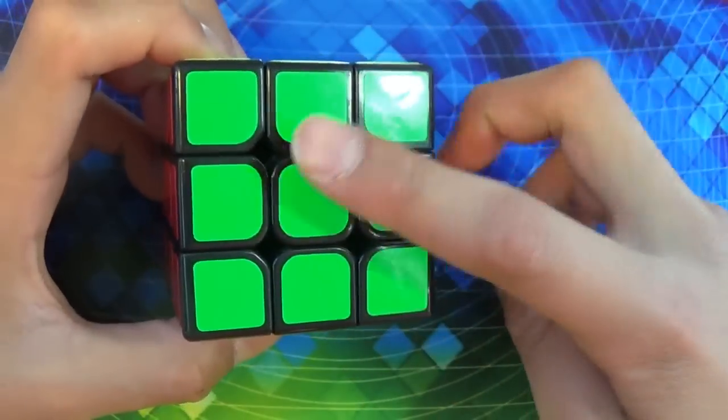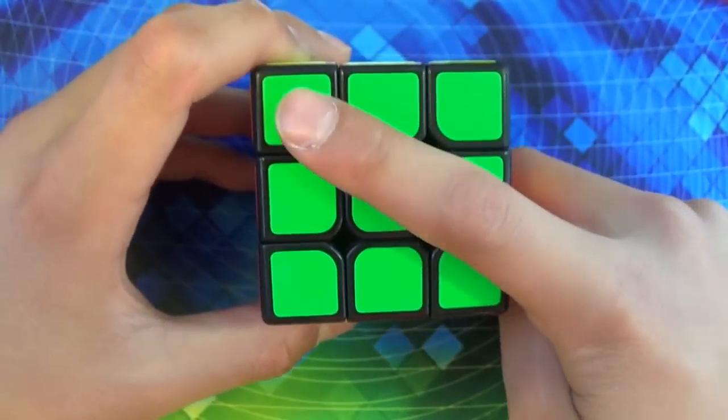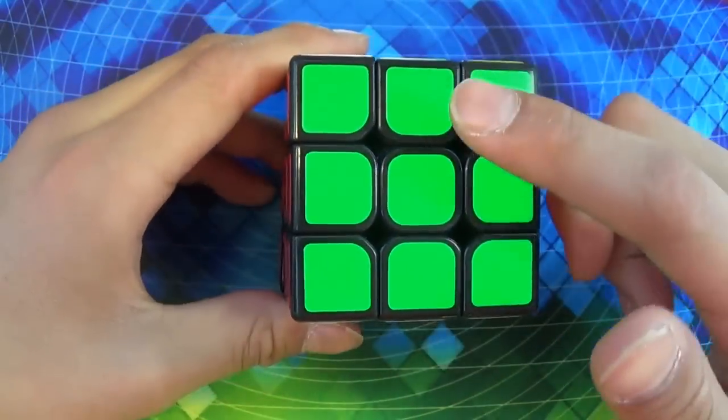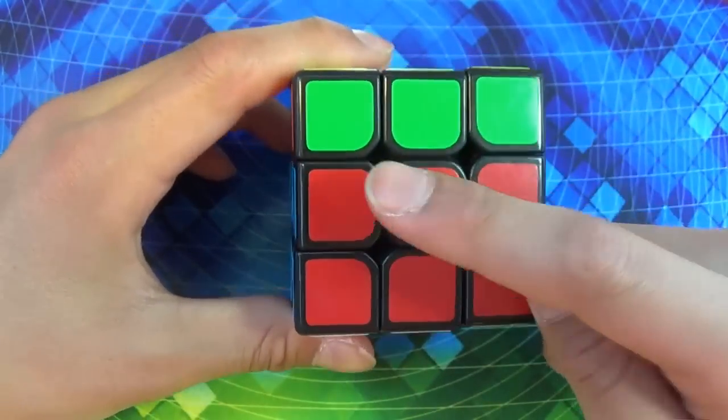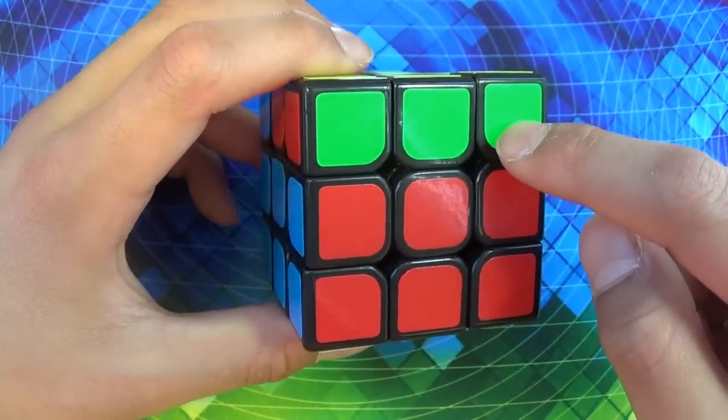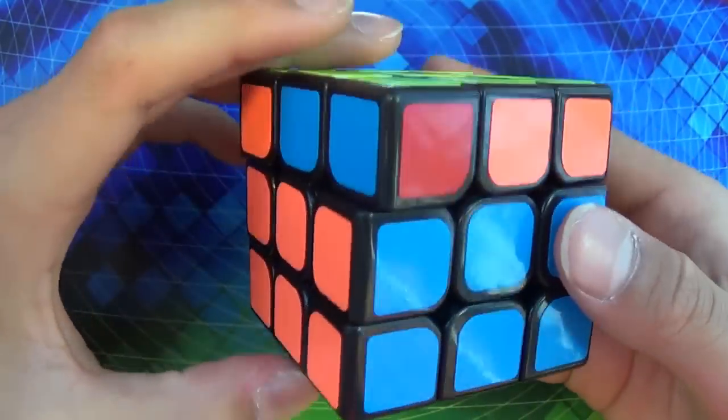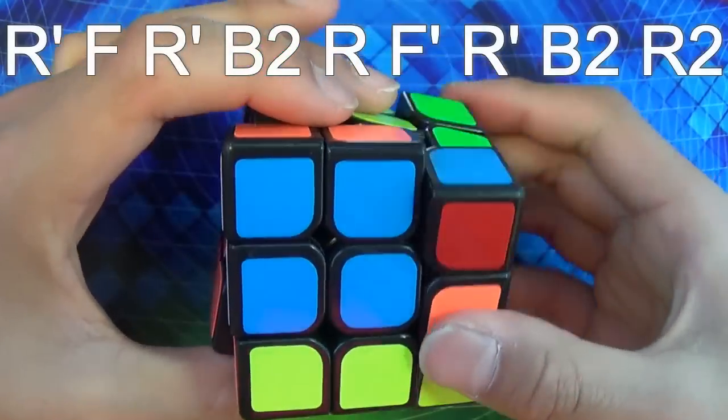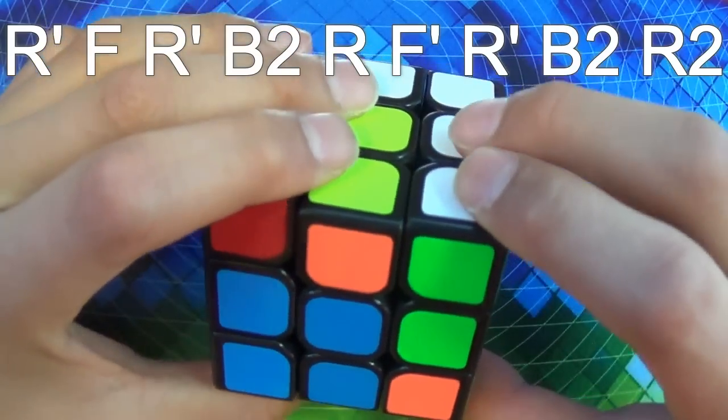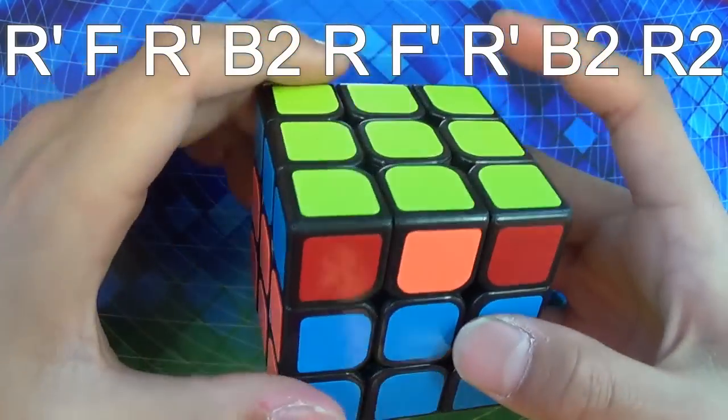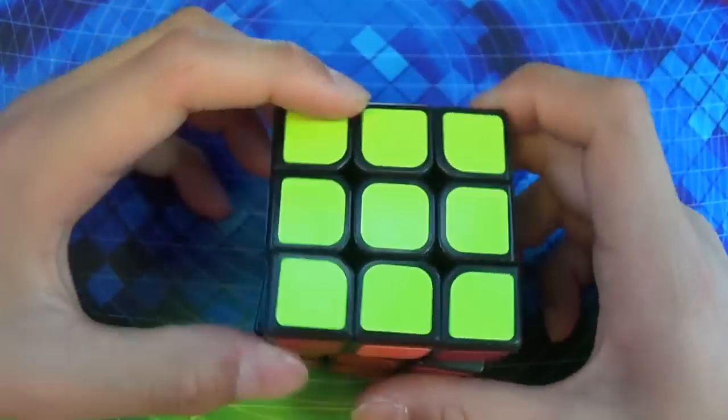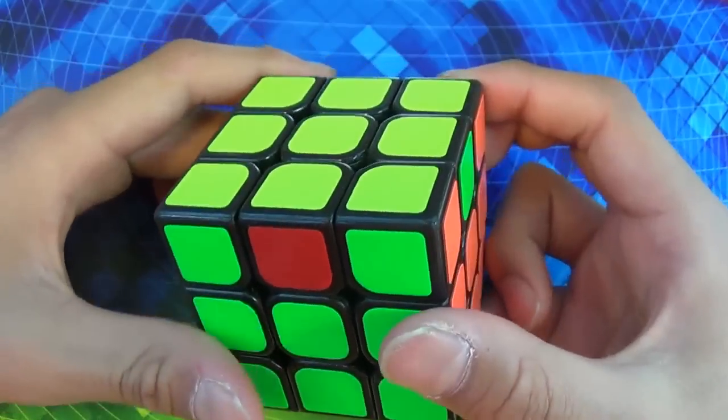And like I said before, this does count as headlights because the corners are matching. So, by the way, it doesn't have to be on a specific side. Like, even if it's on this side, that green corner and that green corner are still matching. So there are still headlights. And then, again, you just do R inverted, F, R inverted, B2, R, F inverted, R inverted, B2, and R2. Now, you'll get three sets of headlights and one solved side. So, I'll tell you what to do.